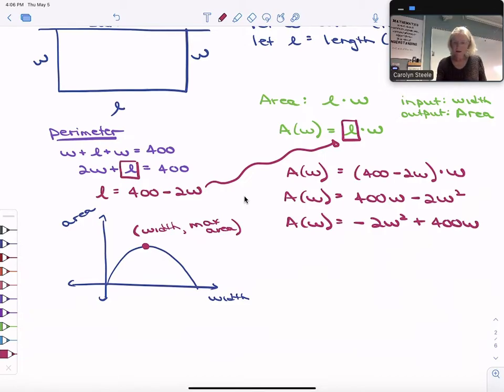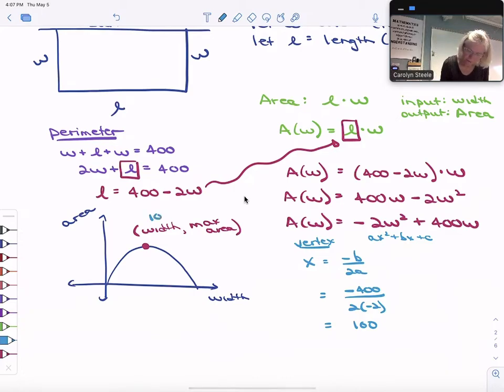All right. So to find the vertex, the equation is written in standard form, ax squared plus bx plus c. So I know my vertex, the x value of the vertex, is the little pattern, the opposite of b all over 2a, which is the opposite of 400 all over 2a, which is going to be 100. So that tells me a width of 100 is going to give me a max area.